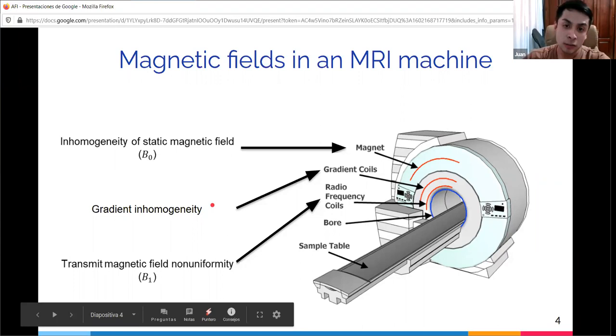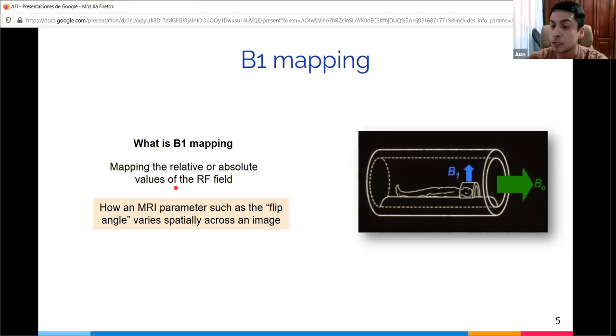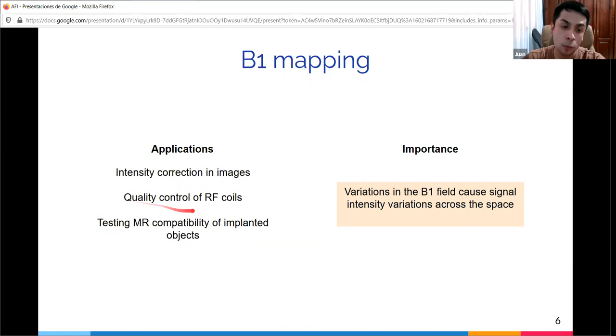This establishes what B1 mapping is. B1 mapping measures the relative or absolute values of the radiofrequency field to know the spatial distribution of the transmitted RF field. It aims to find an MRI parameter which varies spatially across an image. The flip angle is frequently taken as a direct measure of the B1 field because the flip angle is a function of the strength of the B1 field. B1 mapping fulfills a wide range of applications, such as quality control of RF coils or testing MR compatibility of implanted objects.